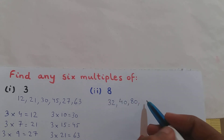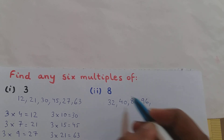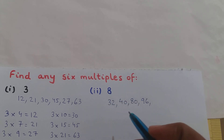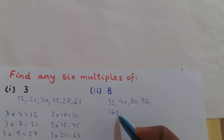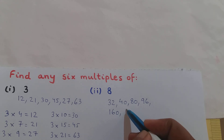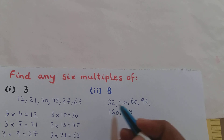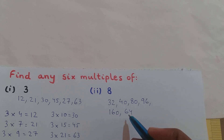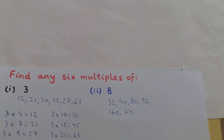8 into 12 is 96, so 96 is a multiple of 8. 8 into 20 is 160, so 160 is a multiple of 8. 8 into 8 is 64, so 64 is a multiple of 8. So these are any six multiples of 8.